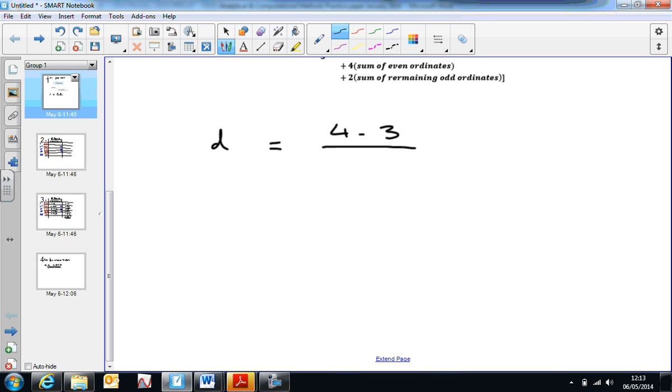So I'm going to choose 4 to make the thing reasonably quick. So 4 take away 3 is 1, divided by 4, so my interval width is going to be 0.25.